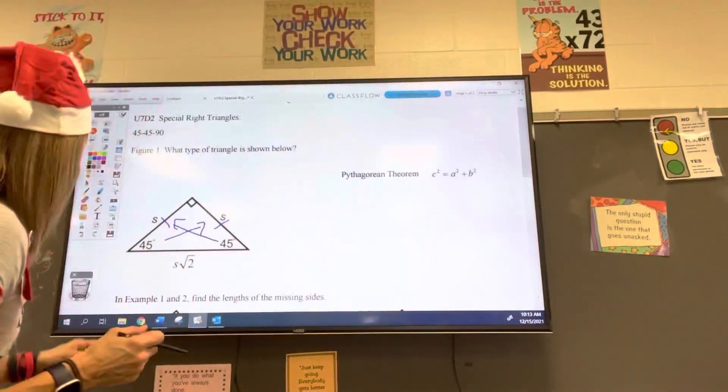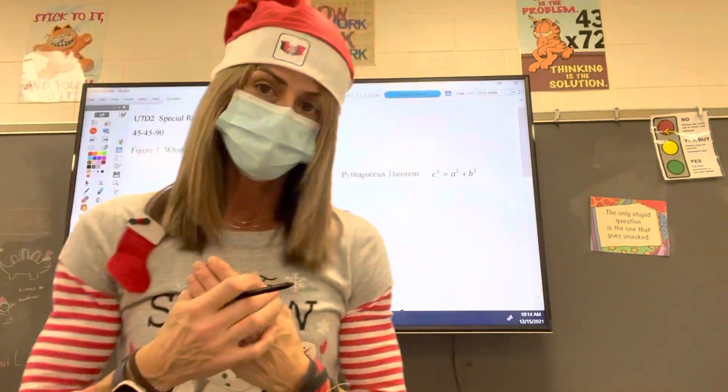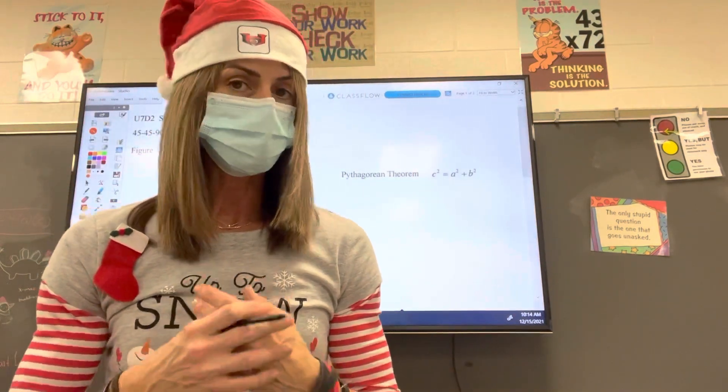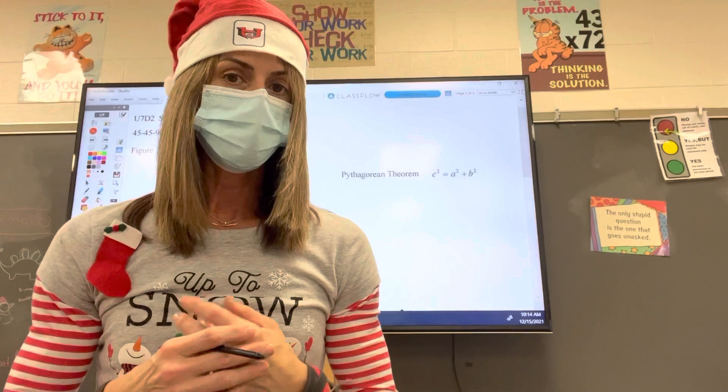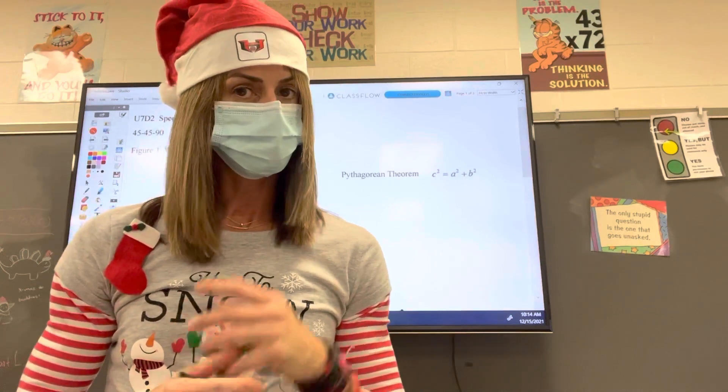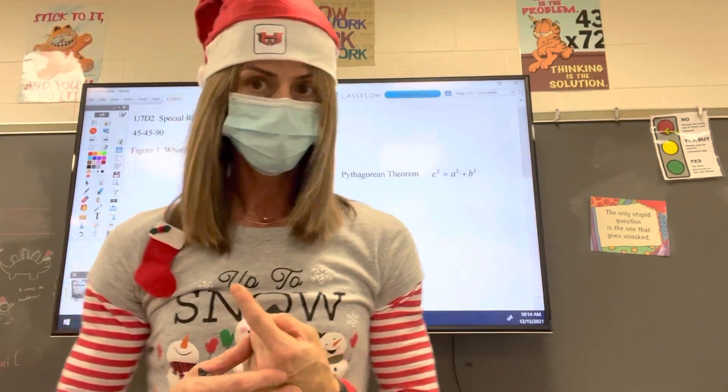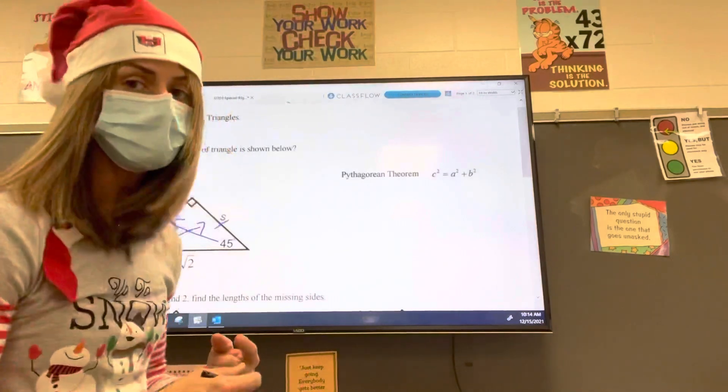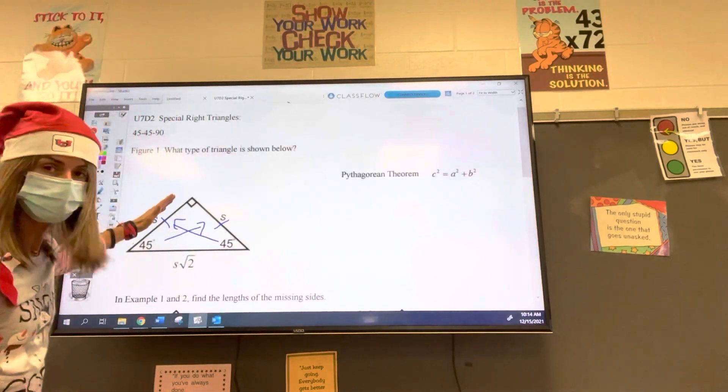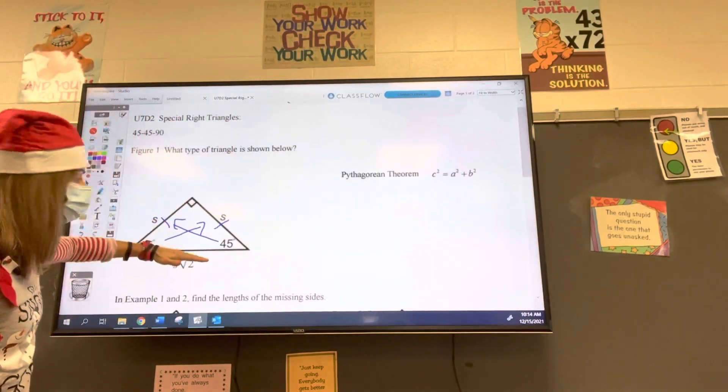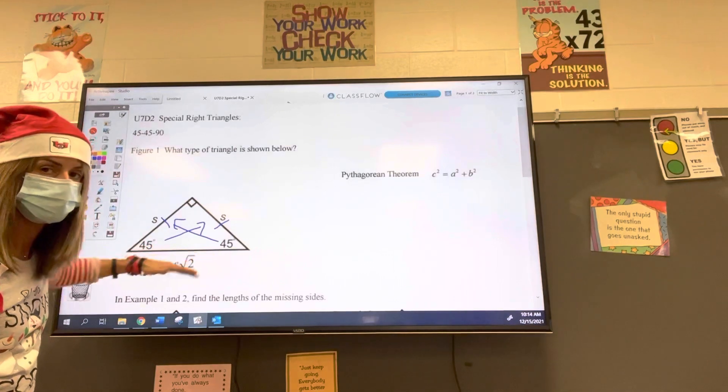The relationship between the lengths of the sides and the hypotenuse of a 45-45-90 triangle, which is one of the special types of triangles that we're going to learn about today, is the length of the sides, times the square root of two gives you the hypotenuse. That's all you have to memorize.